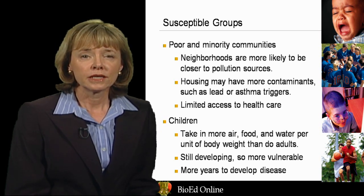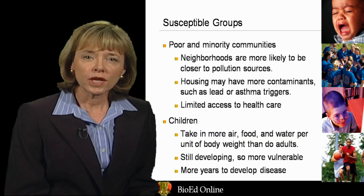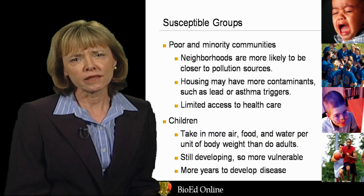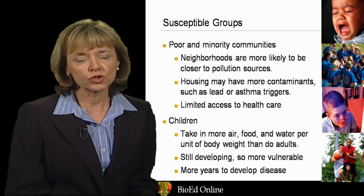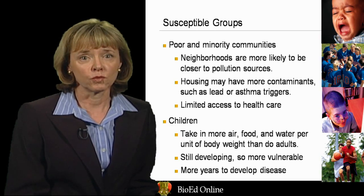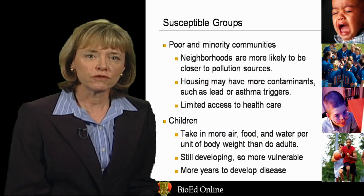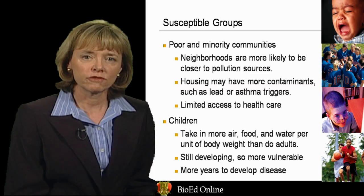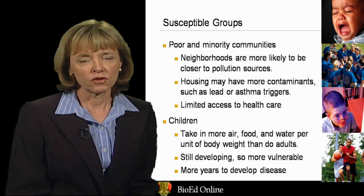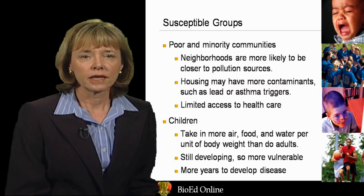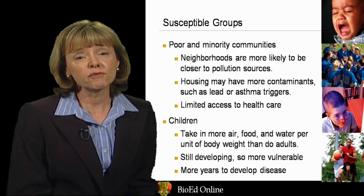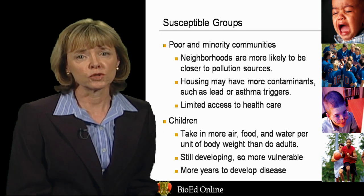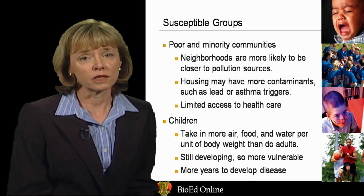Another group that's particularly at risk from harm from the environment are children. Children take in more air, food, and water per unit of body weight than do adults, so proportionately they have a much greater exposure to toxins in the environment than would an adult. In addition, children are still developing, so their bodies are more vulnerable in these key developmental stages to the negative effects of pollutants in the environment. And also, children have many more years to develop a disease after an exposure, if they have an exposure when they are very young.